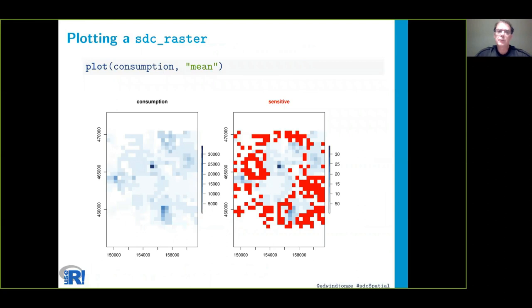If you plot this with the plot function, you can see that the consumption pattern is on the left side, and on the right side you can see which part of the data is sensitive, which is indicated with red.